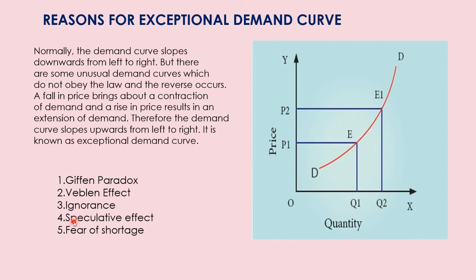The third exception is ignorance. People do not know the price or the market condition and buy as they like. Sometimes the quality of a commodity is judged by its price — people think that if you pay more, you are buying a superior, high-quality good. That is because of ignorance. In that case, the demand curve slopes upwards.